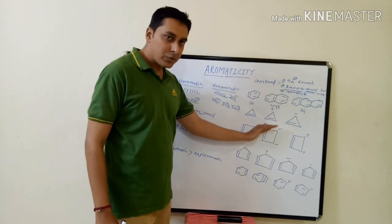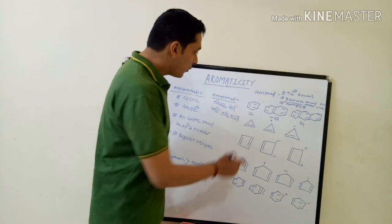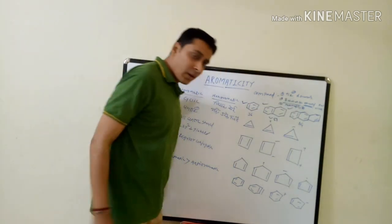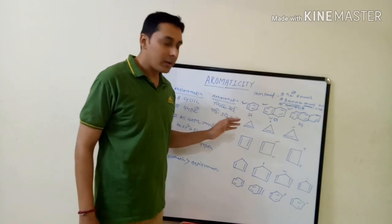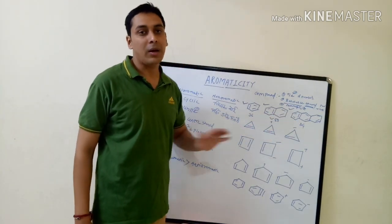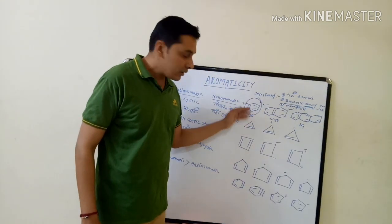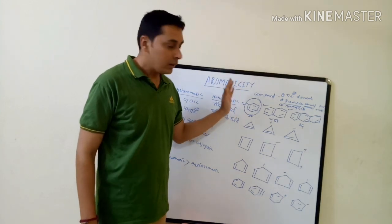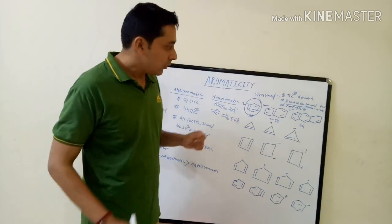Now we look at specific compounds — benzene, naphthalene, and anthracene — to determine which are aromatic, anti-aromatic, and non-aromatic. The resonance energy per ring of benzene is 36 kcal/mol, naphthalene is nearly 58, and anthracene is nearly 84. For benzene, the double bonds are in regular conjugation, it is a cyclic structure obeying Hückel's rule, and it is the primary example of an aromatic compound. Naphthalene and other polycyclic compounds are also aromatic.